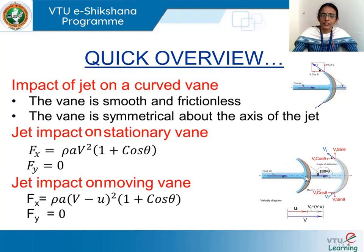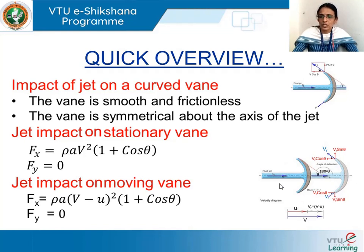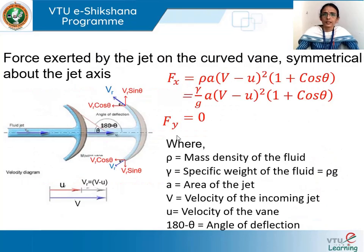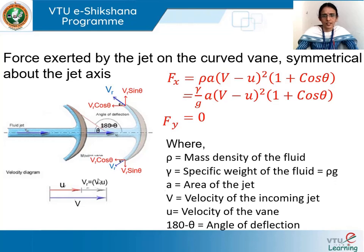If this vane is moving with velocity u along the direction of the jet, we must consider the relative velocity with which the jet is striking the vane. Since v and u are in the same direction, the relative velocity is v minus u. The force expression is then written as: Fx = ρA(v − u)²(1 + cosθ) and Fy = 0. This can also be written as Fx = (γ/g) × A × (v − u)² × (1 + cosθ), where γ = ρg is the specific weight of the fluid.